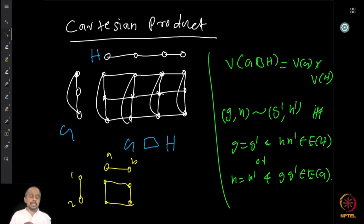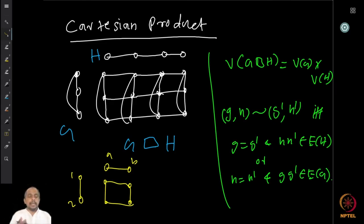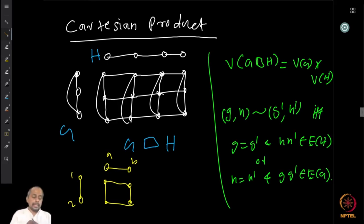Whenever you have an edge in G and an edge in H, you know how to place the edges between the corresponding endpoints in the product. That tells you how to do it for the entire graph, and that is the reason this box symbol is used to represent the Cartesian product.